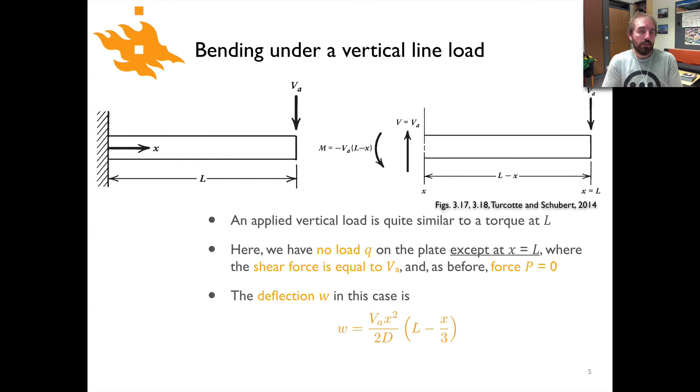Okay, so that was our first case of an applied torque. Now we're going to look at another really simple scenario. In this case, what we're going to do is apply a vertical load at the end of the beam. Instead of applying a torque at the end of the plate, we're going to apply a line load at the free end of the plate. If we're in the ruler world and this is our fixed end and this is the free end, we're just going to push down vertically at one end of the plate.